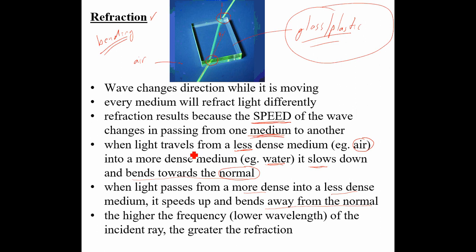We'll also see that a higher frequency wavelength — such as blue or purple light in the visible spectrum — the higher the frequency and the shorter the wavelength, the greater the amount of bending or refraction.